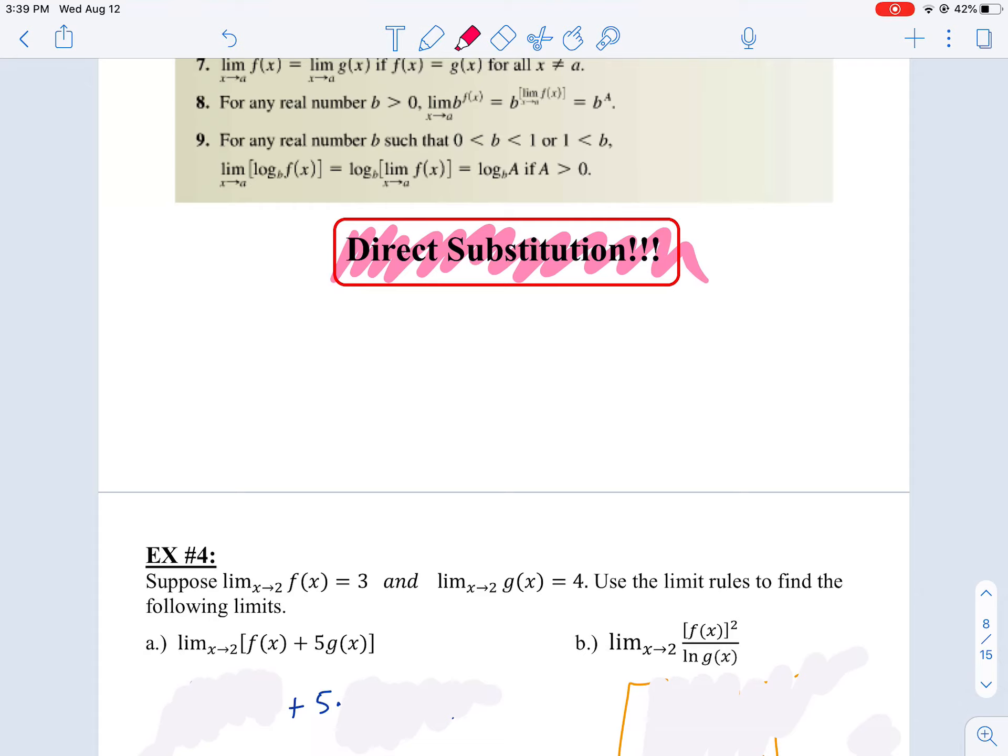If you substitute in a two and you get out a seven, well, hey, guess what? That's what our limit approaches as we approach X equals two. We go to seven.